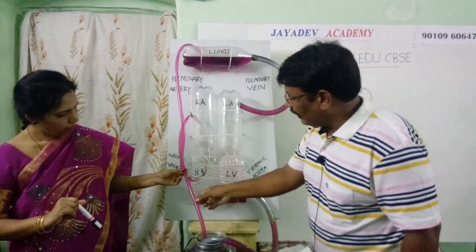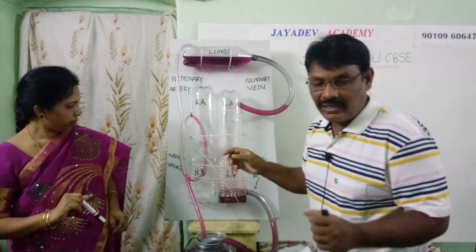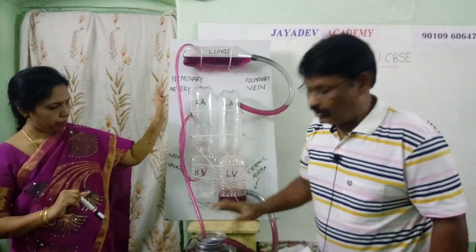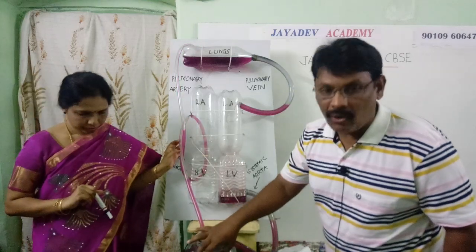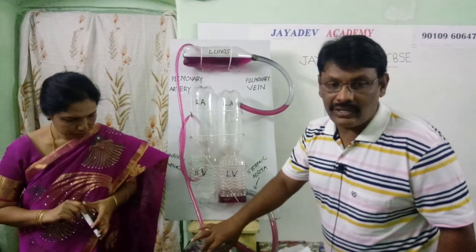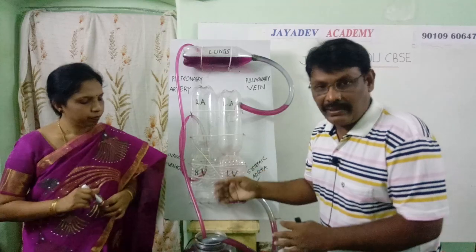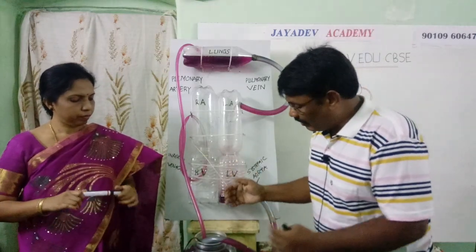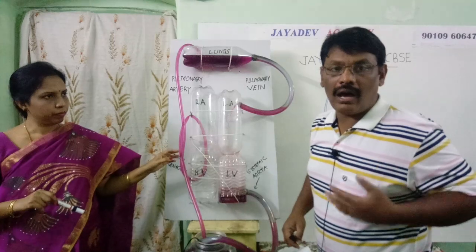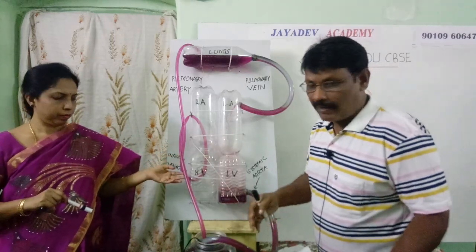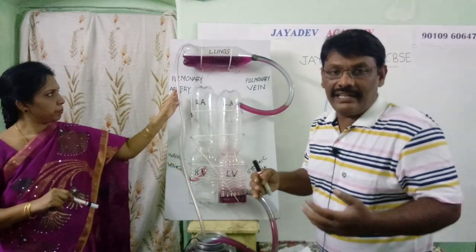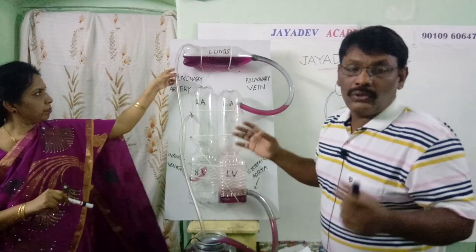Here one tube is there. This tube is named as inferior venacava. Inferior venacava collects the deoxygenated blood from various parts of the body. This bottle indicates the body parts. During metabolic activities, deoxygenated blood is generated. This deoxygenated blood must be oxygenated — converted to oxygenated blood. That's why this deoxygenated blood is carried by the inferior venacava from below the heart, and superior venacava from above the heart.